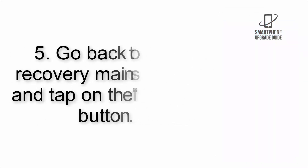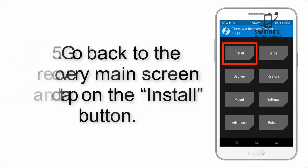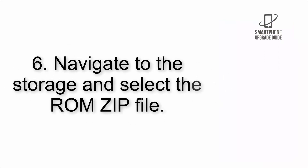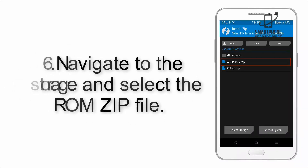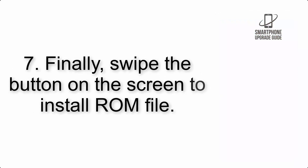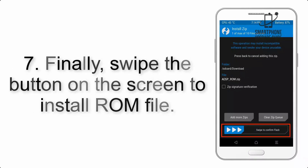Step 5: Go back to the recovery main screen and tap on the Install button. Step 6: Navigate to the storage and select the ROM zip file. Step 7: Finally, swipe the button on the screen to install the ROM file.